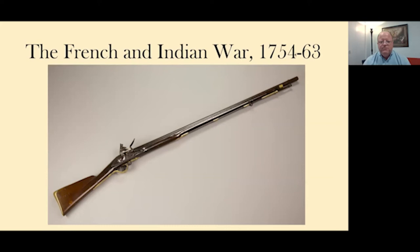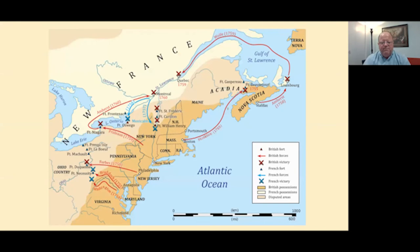The French and Indian War in America lasted from 1754 to 1763 — known as the Seven Years War in Europe, even though in America it lasted nine years. This map shows the extent of the Northern theater. There was also a Southern theater in North Carolina and South Carolina, particularly against the Cherokee Indians of the backcountry and southern Appalachian mountains, but most of the British and American effort was in the North.